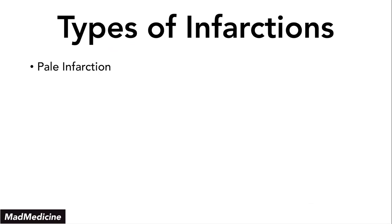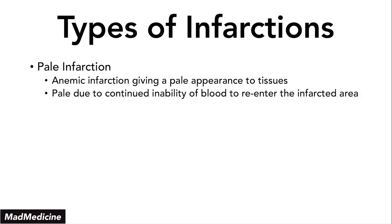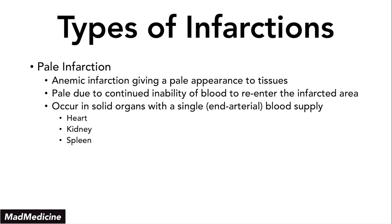When we're talking about pale infarctions, these occur due to no blood gain in that area — also called an anemic infarction. That anemic infarction gives a pale appearance to tissue because there is a continued inability of blood to reenter the infarcted area — essentially the complete opposite of a red infarction. This occurs in solid organs with a single arterial blood supply, like the heart, the kidney, and the spleen. A myocardial infarction is a pale infarction because the heart has a single arterial blood supply.